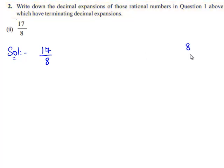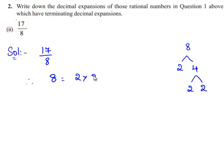8 can be written as 2 times 4, and 4 can be written as 2 times 2. Therefore, 8 can be expressed as 2 times 2 times 2, which is equal to 2 cubed. Therefore, the given rational number becomes 17 upon 2 cubed.